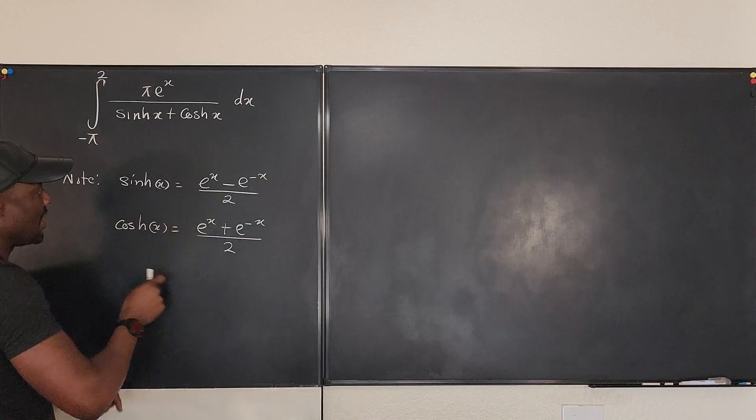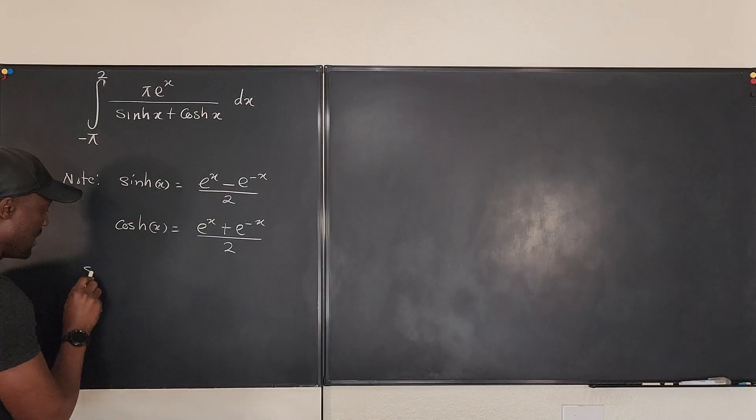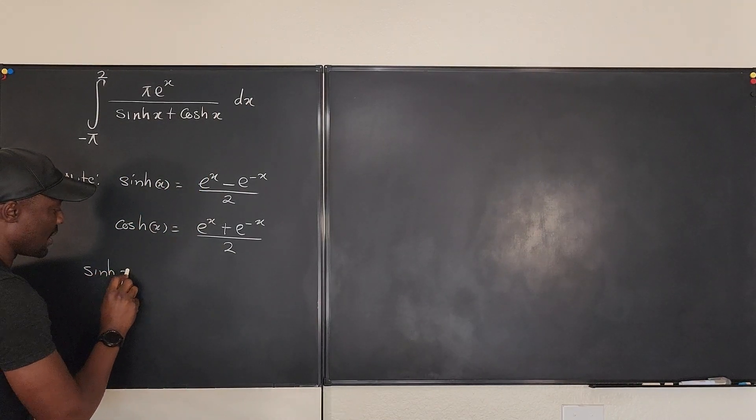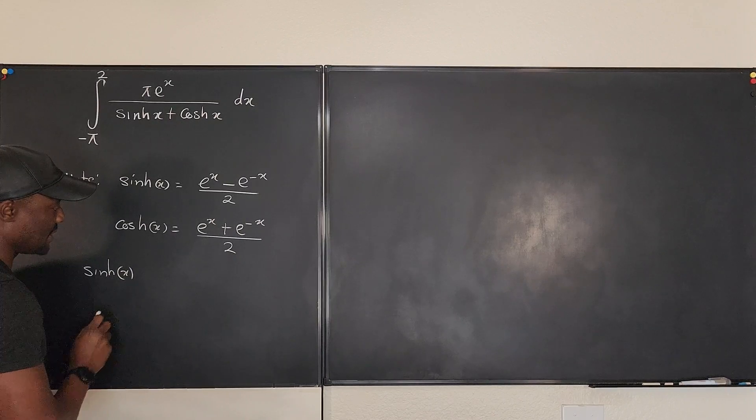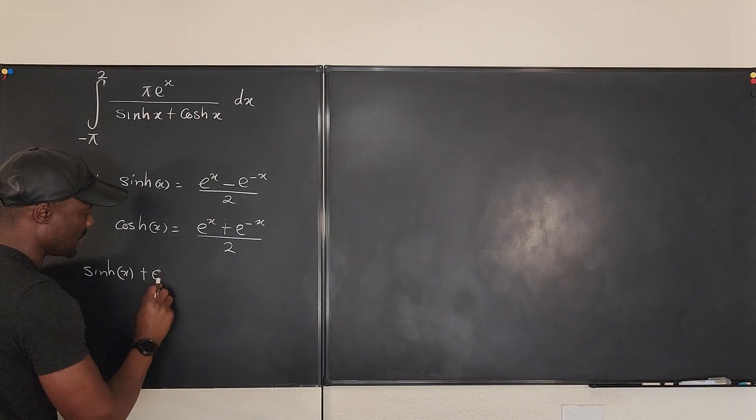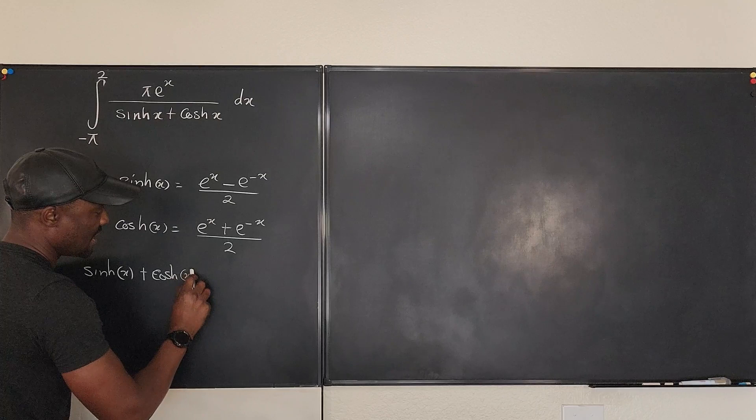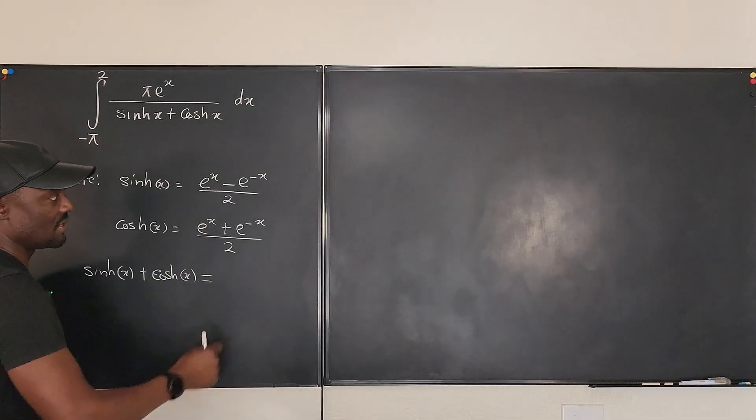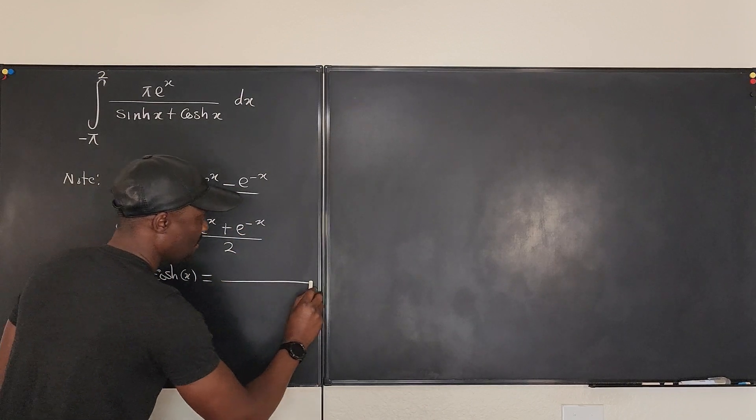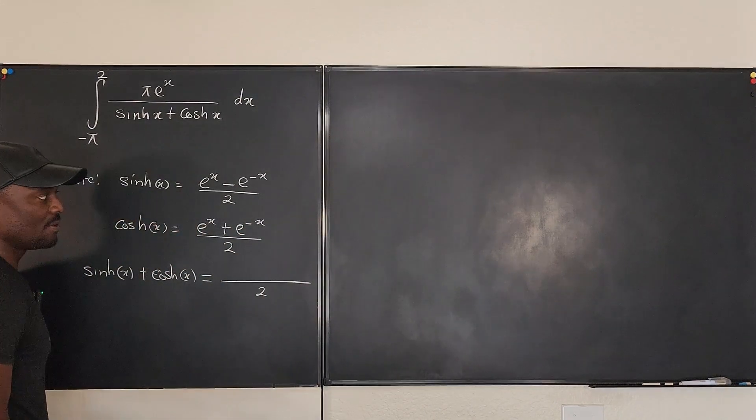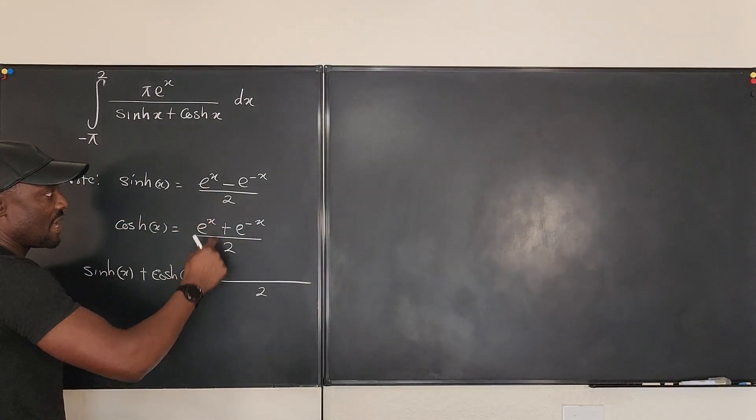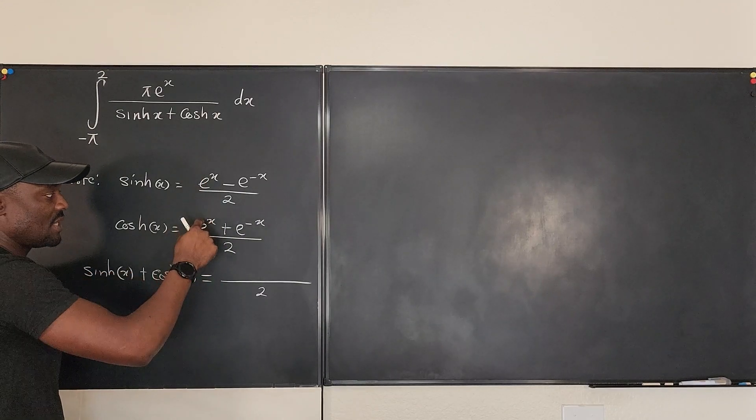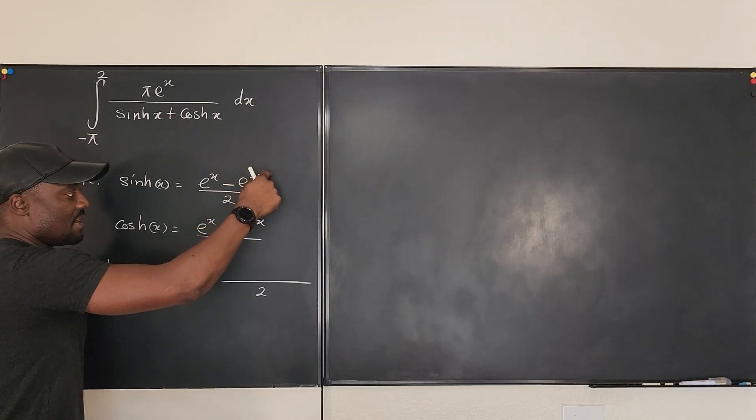So these two terms here, if I add these two together, hyperbolic sine of x plus hyperbolic cosine of x—if I add this to this, guess what I'm going to end up with? Both of them will be over two. So if I add this to this, I'm going to end up with e^x plus e^x minus e^(-x) plus e^(-x).